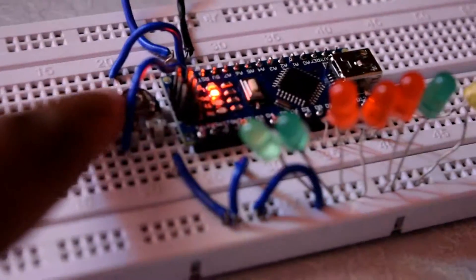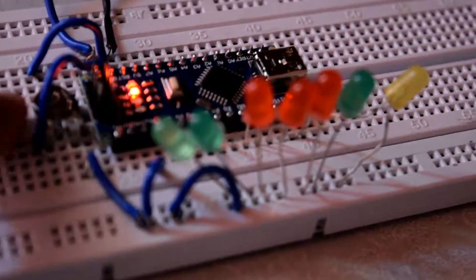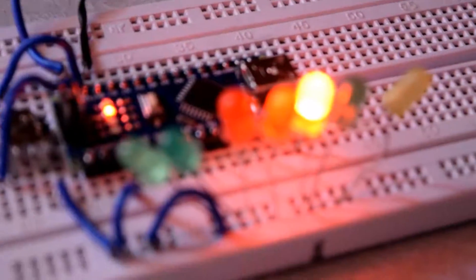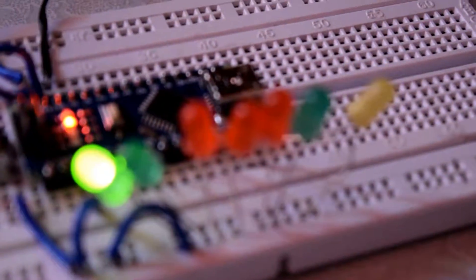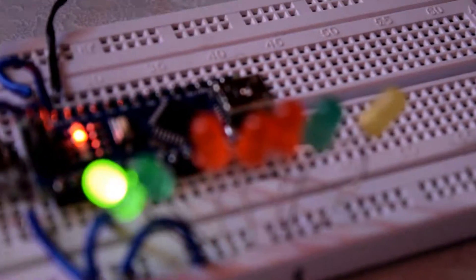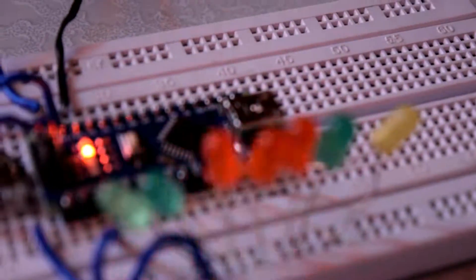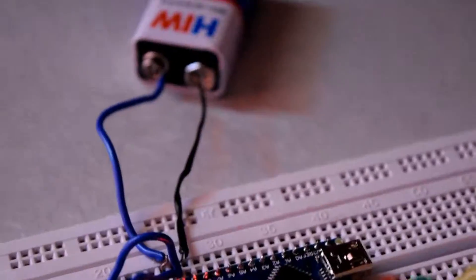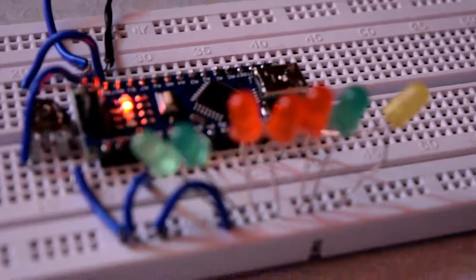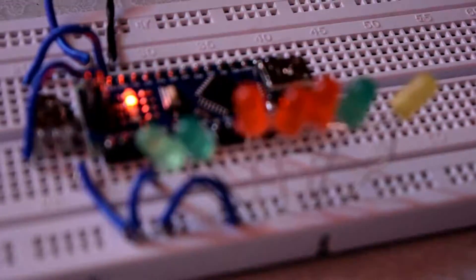You can change the value of the variable resistor to control the speed of the LEDs. That is very simple. Thank you for watching, please like and subscribe. This was my first Arduino project - there will be more.